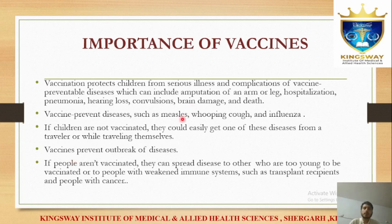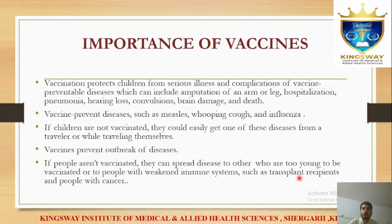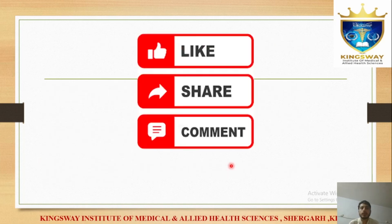Diseases like measles, whooping cough, or influenza can spread from person to person. If a person is not vaccinated, they can transfer the disease to another person. If people in one season don't get vaccinated, the disease spreads to others. Vaccination stops this spread — if a person is vaccinated, they break the chain of transmission. This is the important concept.